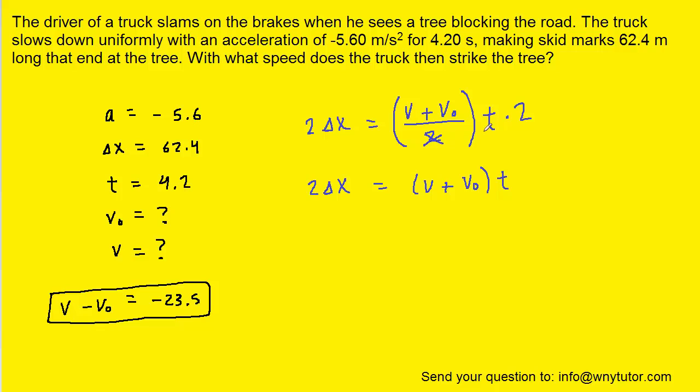Notice that by doing that, the 2 in the denominator canceled with that 2 there. We will then divide both sides of this equation by t, and we will have successfully isolated v plus v naught.